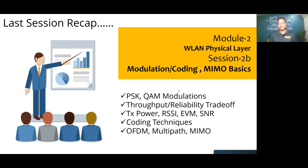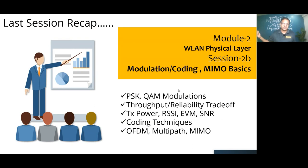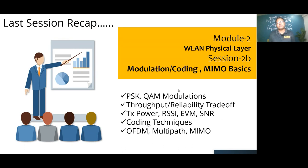We talked about EVM, or Error Vector Magnitude, which measures the fidelity and quality of the signal at the receiver. We also covered SNR — Signal-to-Noise Ratio — which measures the quality of the desired signal with respect to the noise floor. A simple analogy: the sound of my voice is the signal, while air conditioning and fan noise are the noise. As long as my signal is much better than the noise, I have a good SNR.